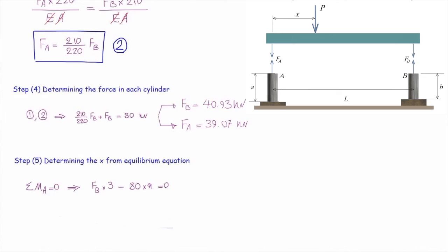And from this equation, I can determine X, that would be 3 times F_B divided by 80, and if I plug the value of F_B in that equation, that gives me 1.535 meters.